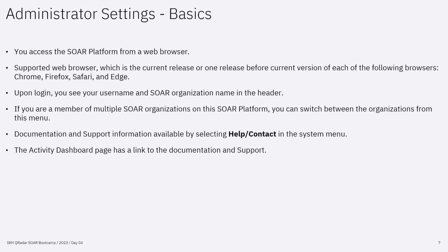Now let's understand the basics of Administrator settings. You can access the SOAR platform from a web browser. The supported web browsers are Chrome, Firefox, Safari, and Edge. Make sure these browsers are on the latest release or one release before the current version. Upon login, you'll see your username and SOAR organization in the header. If you're a member of multiple SOAR organizations, you can switch between organizations from the menu. Documentation and support information is available by selecting the help contact in the system menu, and is also available via a link on the activity dashboard page.